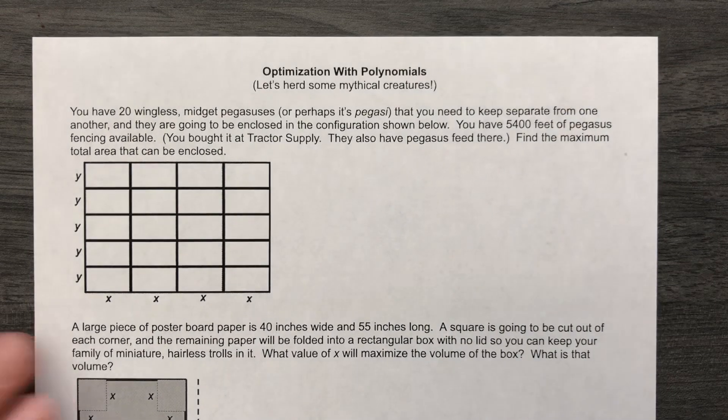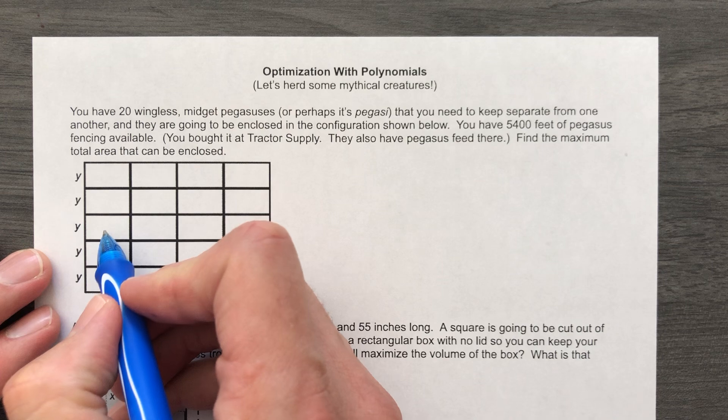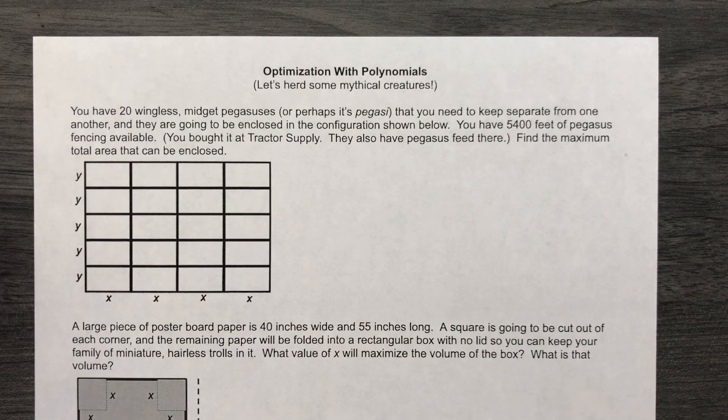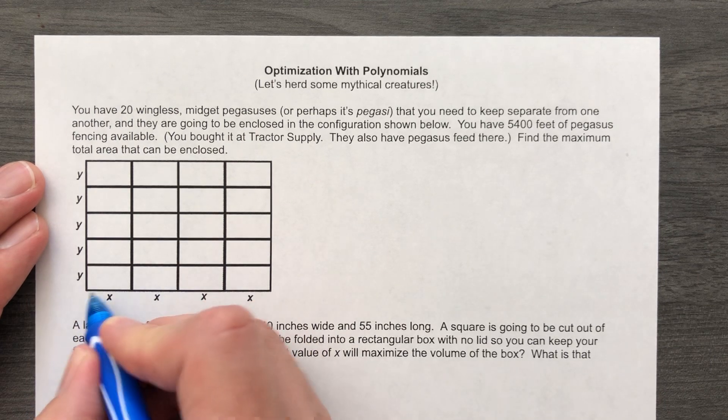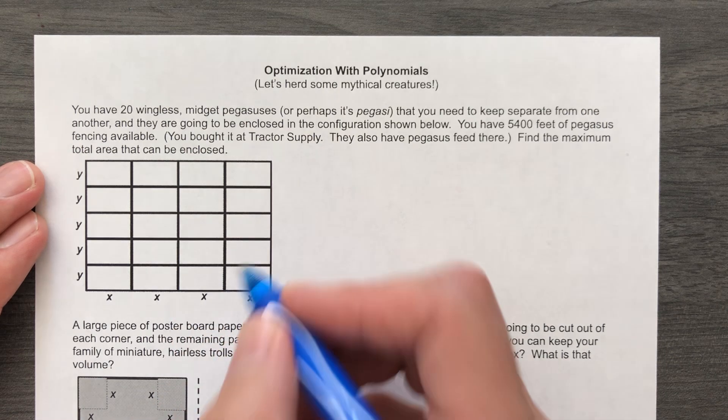Whoa, what in the world is going on here? There's a lot. So what you're gonna do is take your 20 Pegasuses and you're gonna put one in each of these little rectangular pens that measure X by Y. Every one of these is gonna be X wide and Y high, X by Y, X by Y.